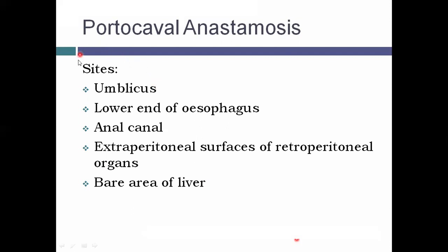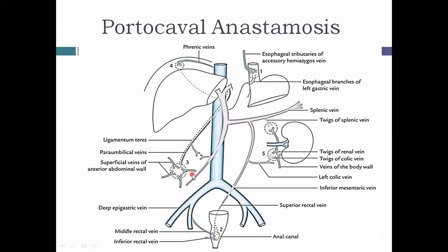There are five important sites of portocaval anastomosis: the umbilicus, the lower end of the esophagus, the anal canal, the extraperitoneal surface of retroperitoneal organs, and the bare area of the liver. The first three are the major sites with important clinical correlations. At the umbilicus, the para-umbilical vein (tributary of the left branch of the portal vein) anastomoses with the superficial veins of the anterior abdominal wall.